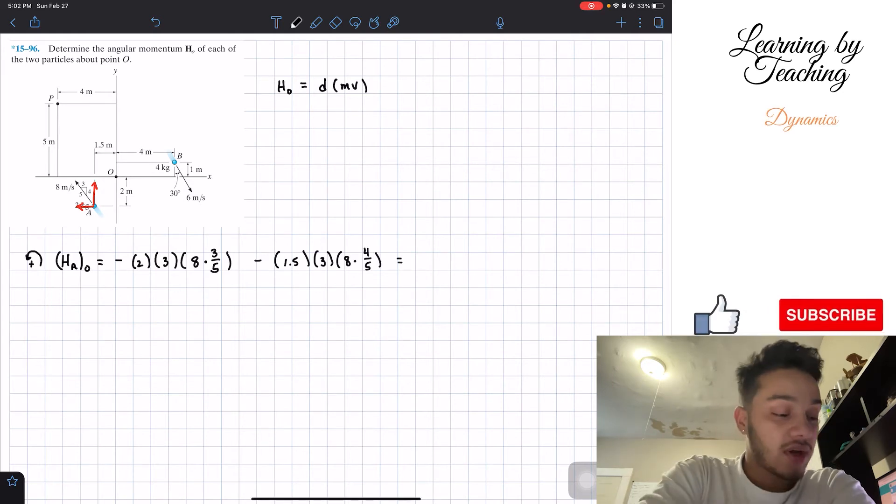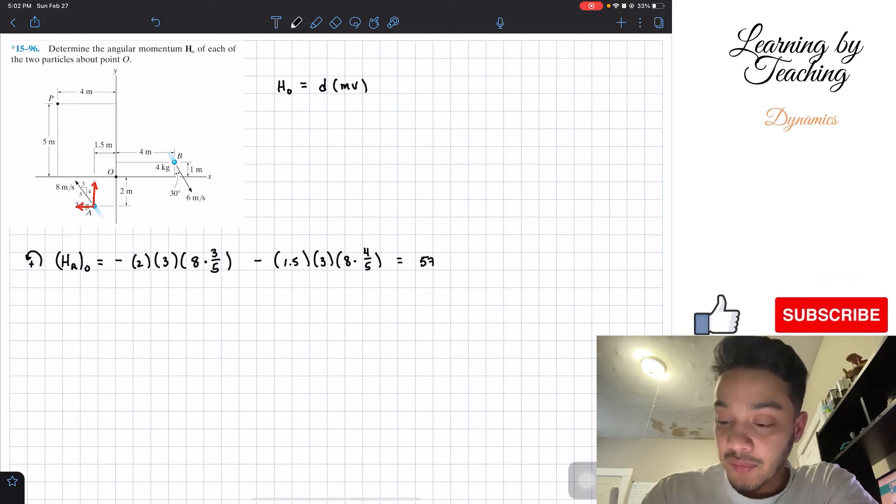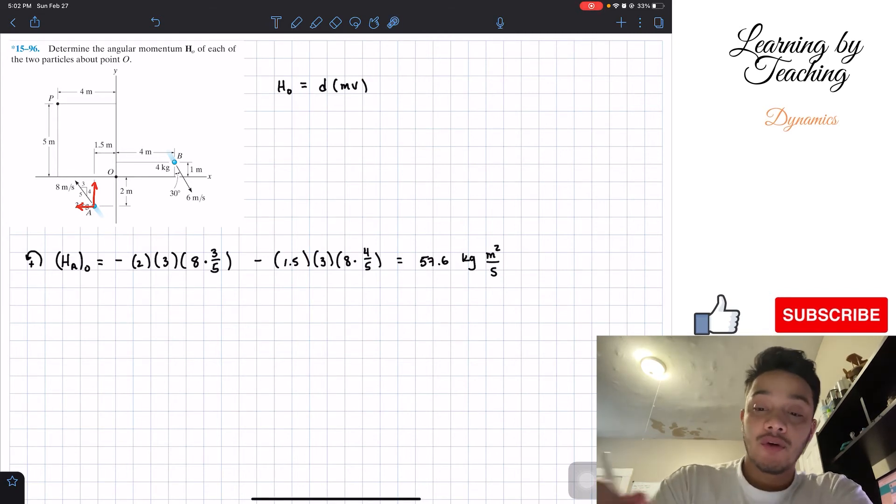If we plug this into our calculator, we will find out that this is equal to negative 57.6, and the units are going to be kilograms meter squared per second. So we're done with particle A.